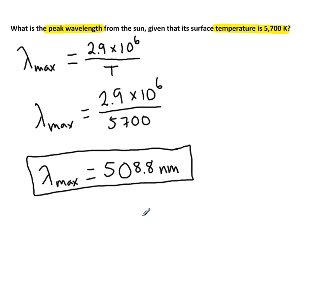So we've finished this problem. To be complete, you would want to make sure that you could put this answer in a sentence. A good sentence would be something like, the peak wavelength emitted from the sun is around 509 nanometers.